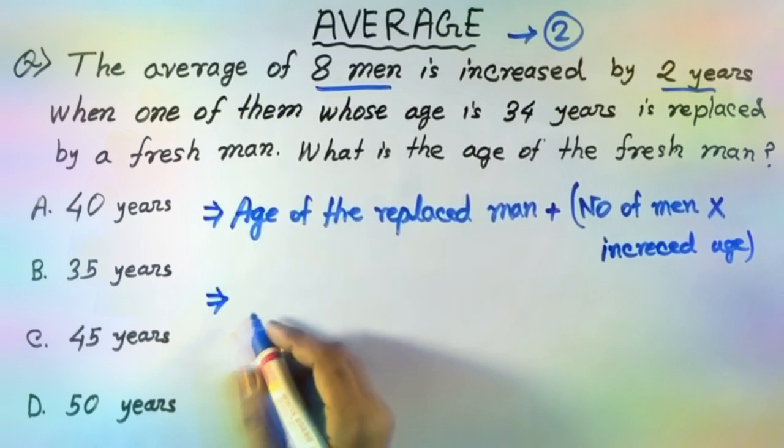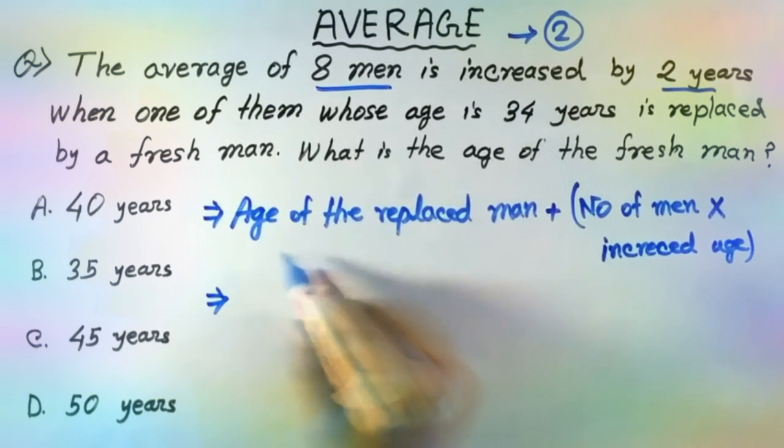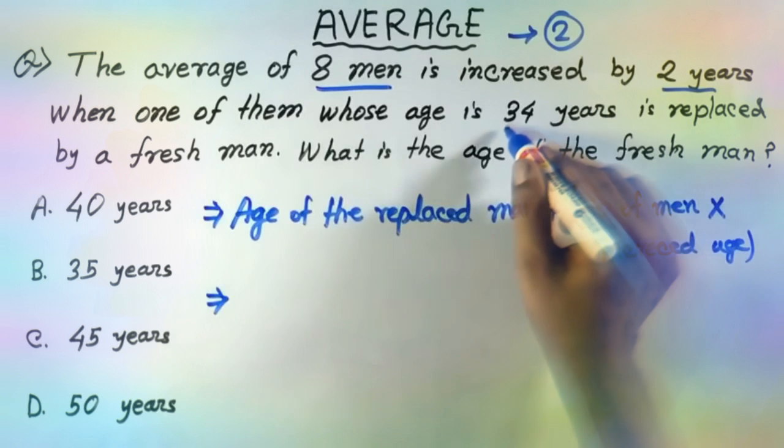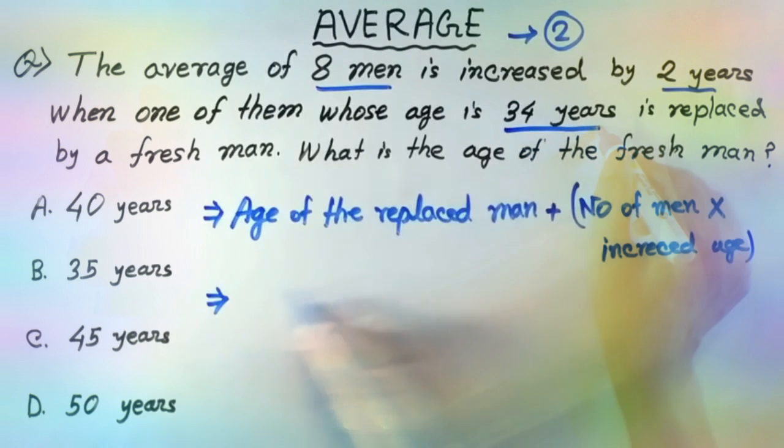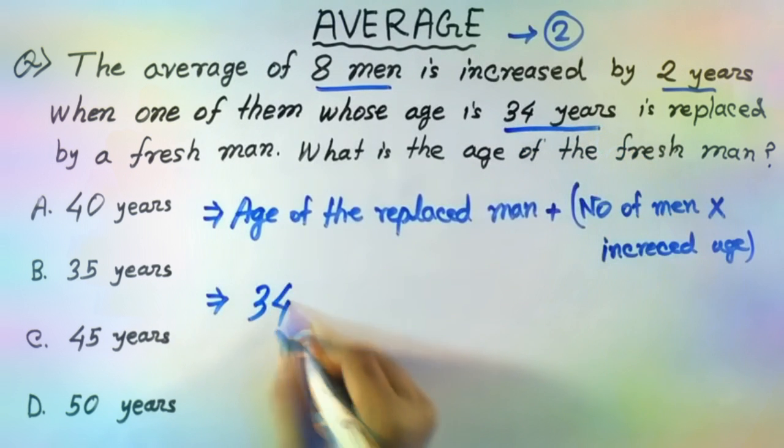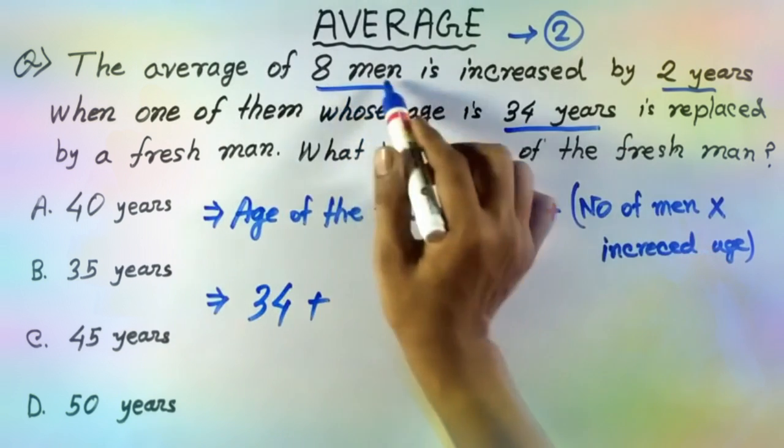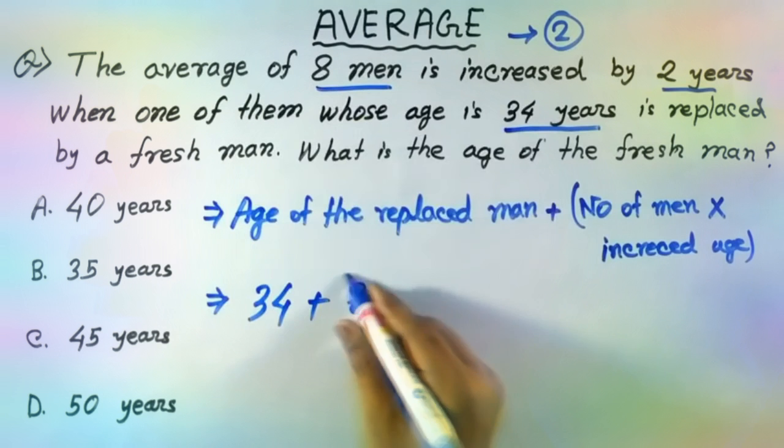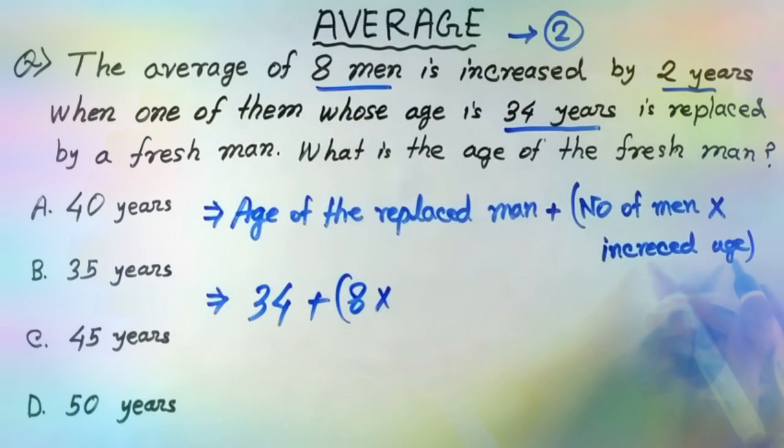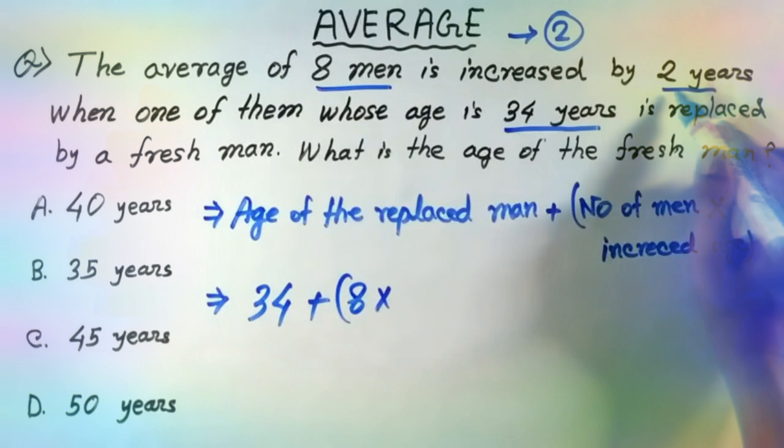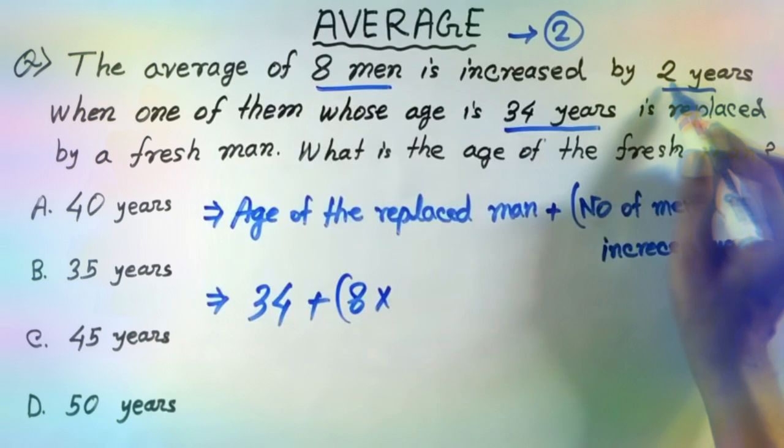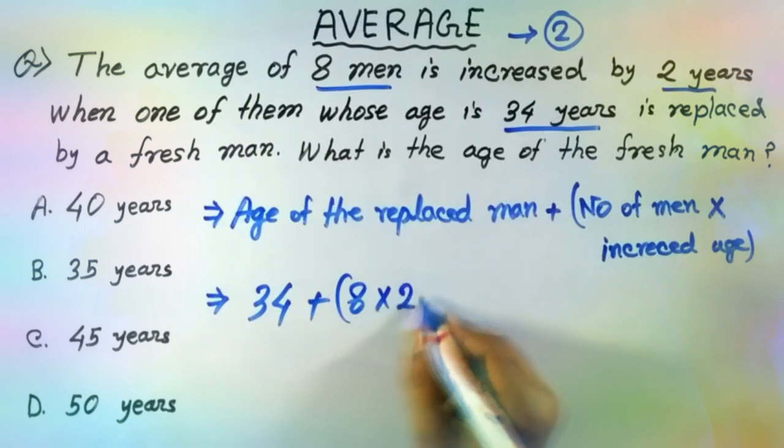The age of the replaced man is 34 years. The number of men multiplied by the increased age, which means 2 years.